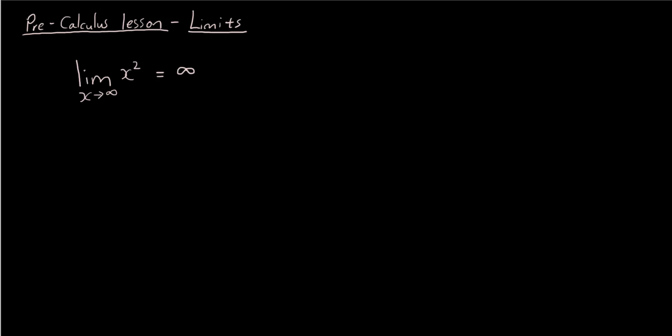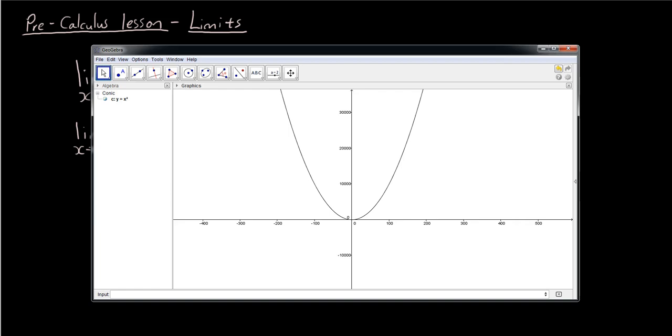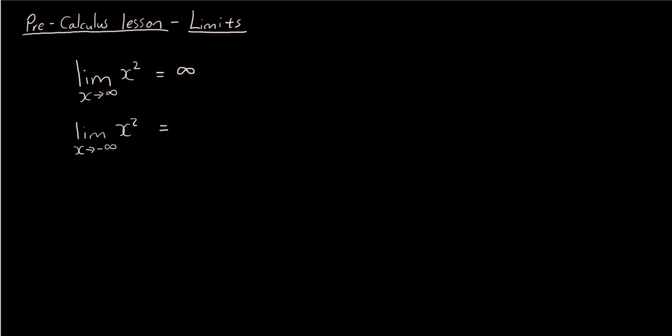So that is the beginning concept of limits. As x approaches infinity, the limit of x squared as x approaches infinity is equal to infinity. What about the limit of x squared as x approaches negative infinity? If we look at the graph, as x gets smaller and smaller towards the left, y is still going up — so this would still be positive infinity.